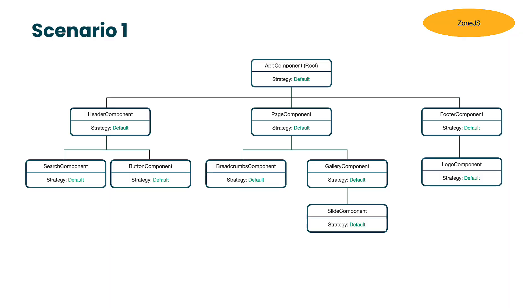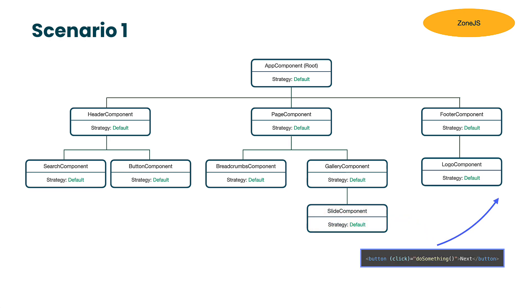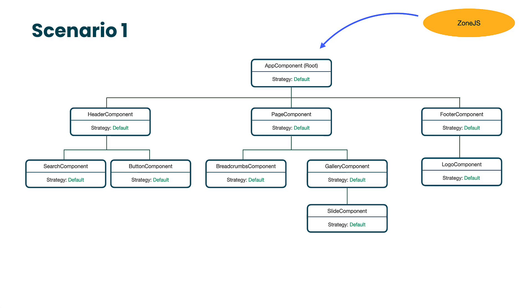Now let's visualize the change detection process with different scenarios. Scenario one: all components have the default change detection strategy. When an async event happens in any component, after the async task executes, Zone.js notifies Angular, and Angular performs recursive view checking for the entire view tree from top to bottom.